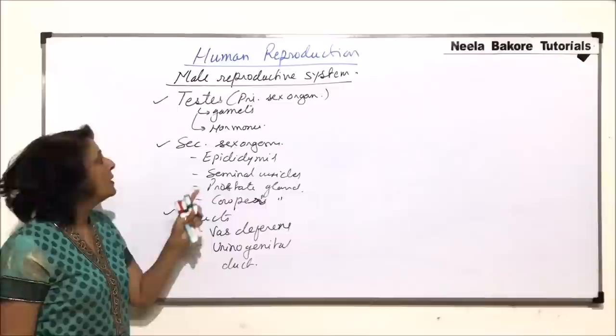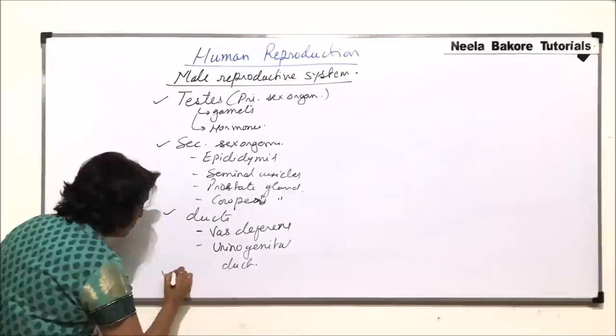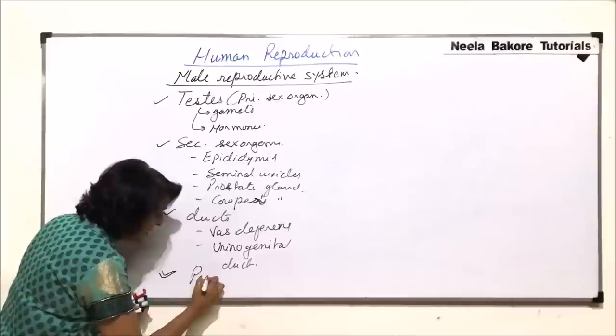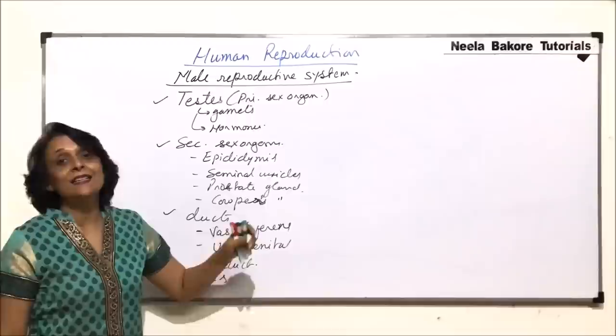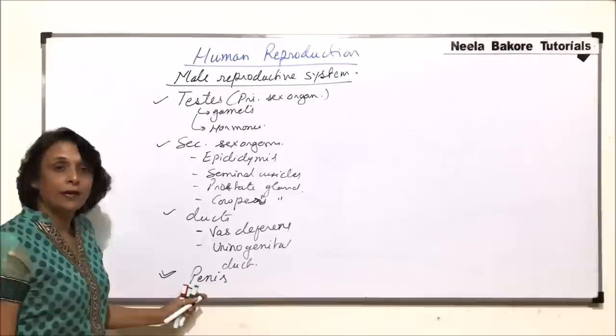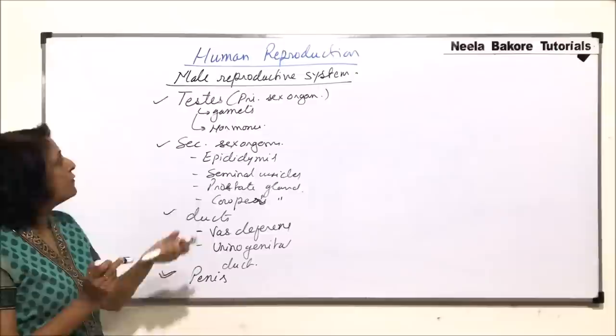These are all the organs which are there. There is one more structure called external genitalia and that is the penis. This is the external genitalia which helps in insemination, that is, deposition of sperm into the female body. Now, let us come to the first part, that is, the testis.